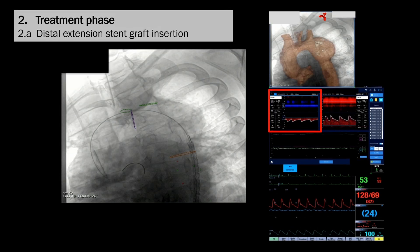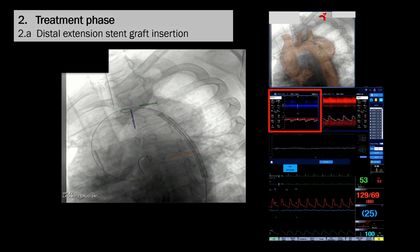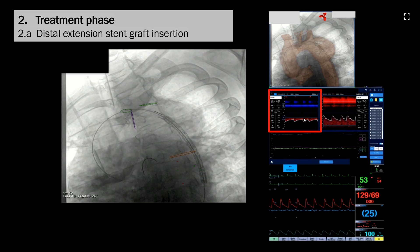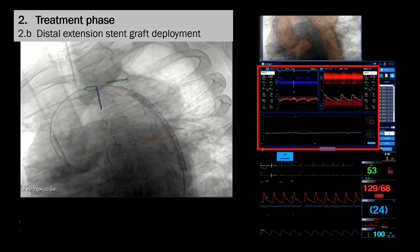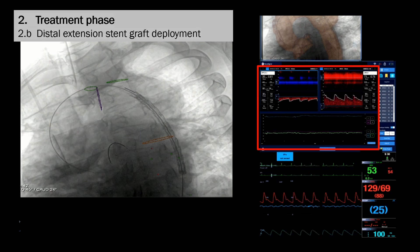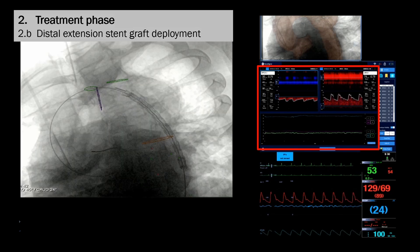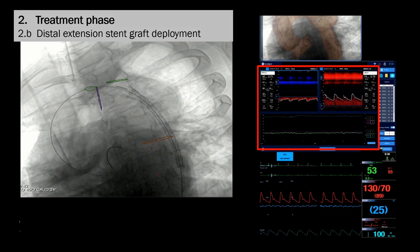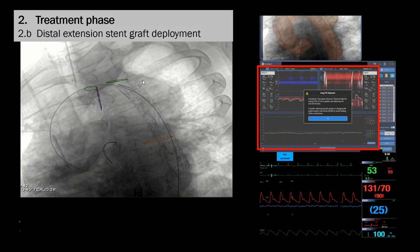The introduction of the first device, which is the distal extension Gore stent graft measuring 31 by 31 by 100 millimeters, caused one hit in the right posterior cerebral artery. Numerous hits are seen during the deployment of the distal extension stent graft — we presume these hits are caused by air bubbles. The stent graft is being deployed in two steps and hits are seen during both. This is the intermediate deployment, and hits are seen mainly in the left middle cerebral artery.